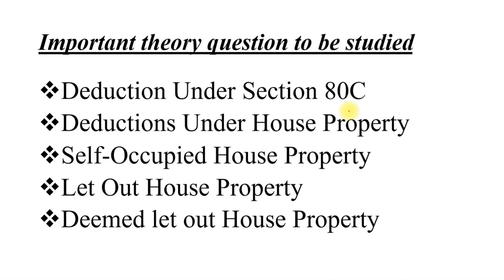Next: deduction under house property. You have standard deductions, deduction under Section 24, and all those things will come under that. Self-occupied house property — you have to explain what is self-occupied. Let-out house property and deemed to be let-out house property. Under these three short notes you need to give a meaning about what these types of house property mean, and then show a small format of a house property problem sum — how to solve it based on that format.